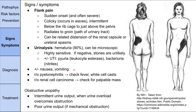If someone comes in with these symptoms, you first want to rule out pyelonephritis — check for fever and white blood cell casts in the urine. You also want to rule out renal cell carcinoma, which might present with a palpable mass, weight loss, or other cancer symptoms. There's also the picture of obstructive uropathy — if someone has intermittent urine output because a stone is severely blocking the ureters, they'll have very poor urine output and may require a urology consult.